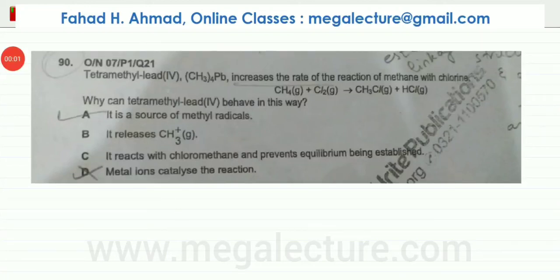The following question reads that tetramethyl lead, which is CH3 brackets 4 PB, increases the rate of the reaction of methane with chlorine. So methane is reacting with chlorine and you're being asked why can tetramethyl lead behave in this way. It increases the rate of the reaction and if you look carefully, this is a free radical substitution reaction for methane.